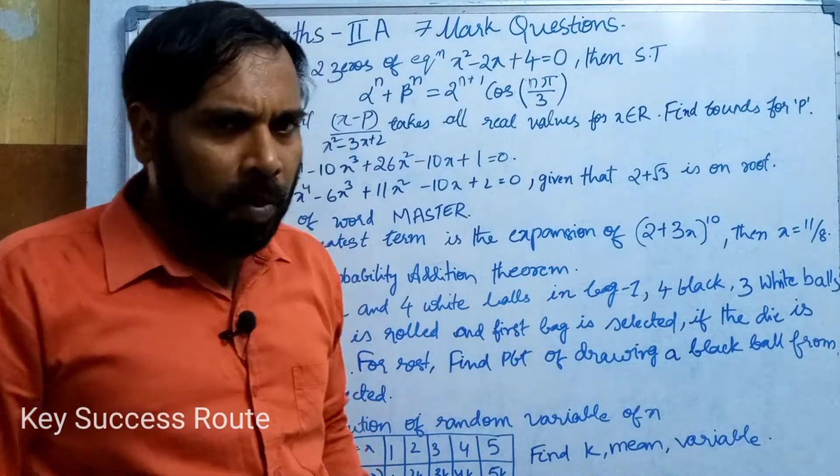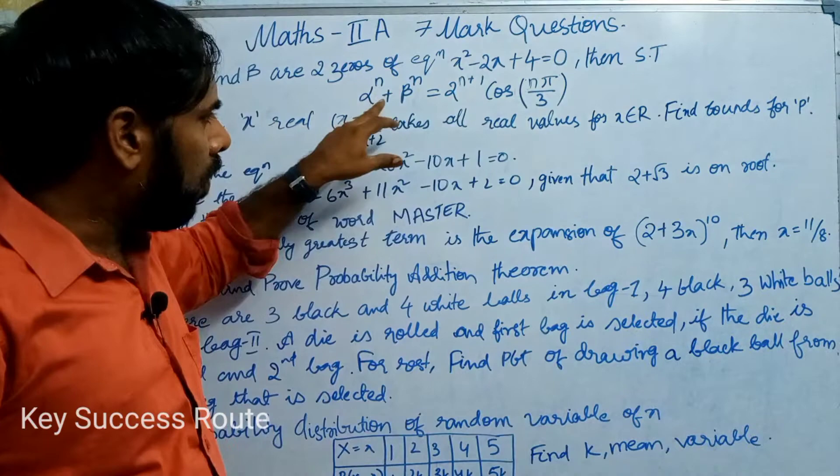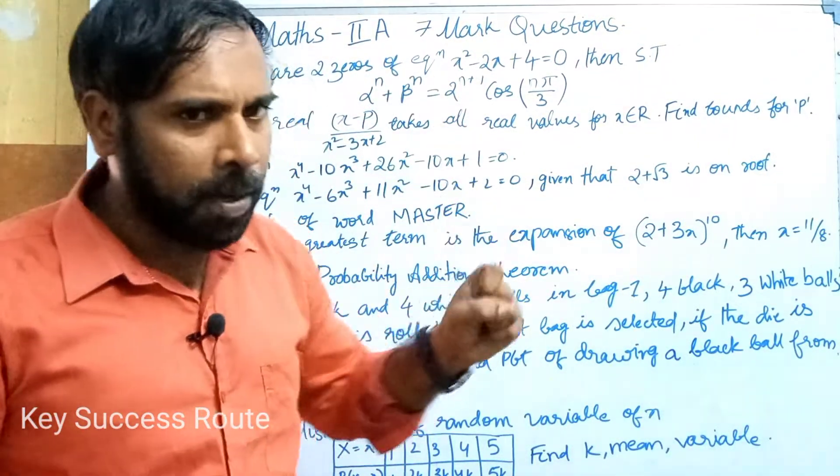If you want to go to the demo, then factors will be available to you. So, if the alpha power n plus beta power n equal to 2 power n plus 1 cos n pi by 3.